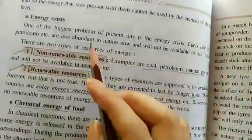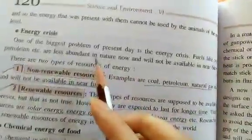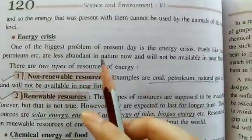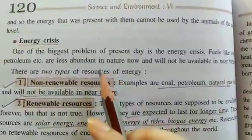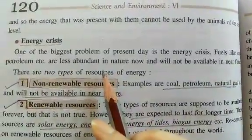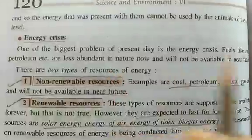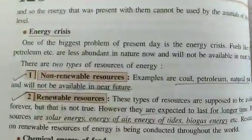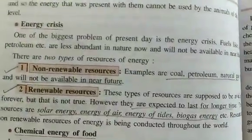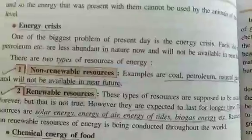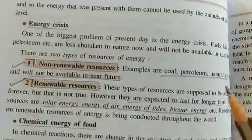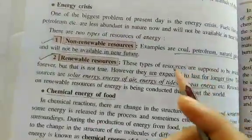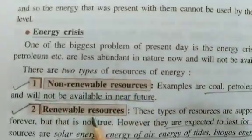Now, energy crisis. This is a biggest problem nowadays, because due to the excessive use of energy, fossil fuels like coal and petroleum are less abundant, and in the near future they will not be available. We know there are two types of energy resources: non-renewable resources and renewable resources.